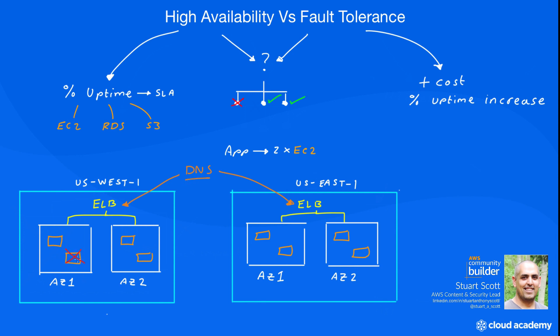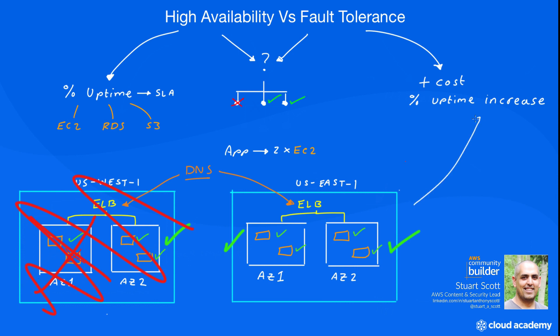This means should an EC2 instance fail, we still have compute. Should an AZ fail, we still have enough compute capacity. But now we can also maintain operation should an entire region fail. If it does, we can still suffer further EC2 outages and availability zone outages in that secondary region and still maintain the minimum requirement of having two EC2 instances at all times. This offers far greater uptime availability compared to the previous highly available single-region solution.